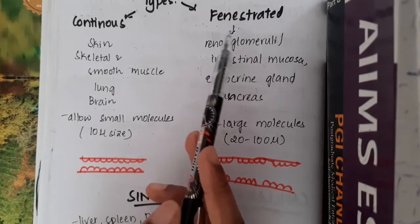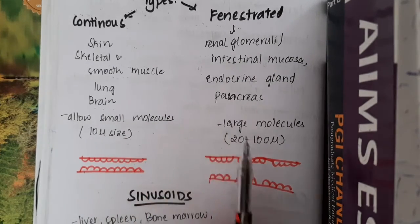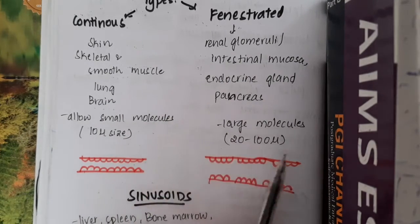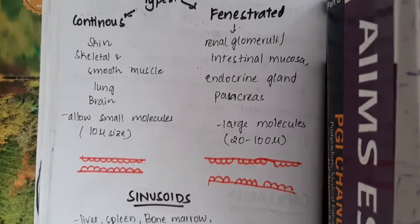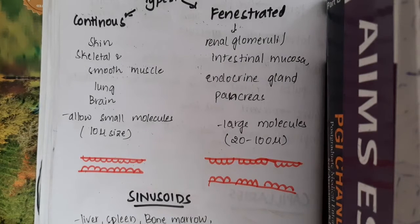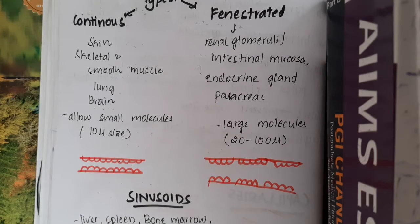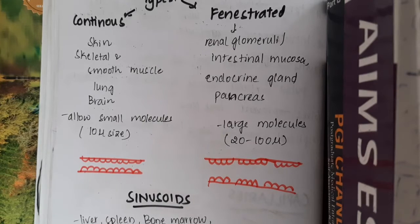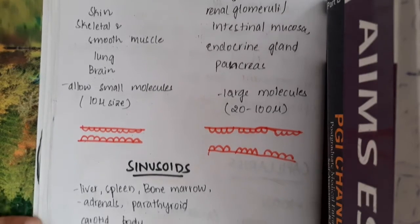Fenestrated capillaries allow larger molecules of 20 to 100 microns in diameter to pass through. These fenestrated capillaries include renal glomeruli, intestinal mucosa, endocrine glands, and pancreas.